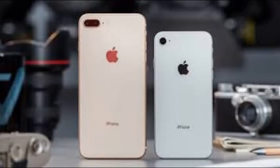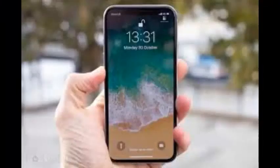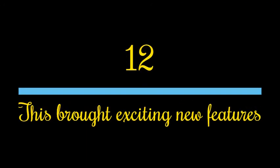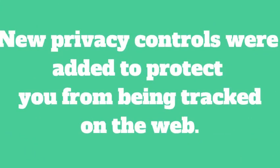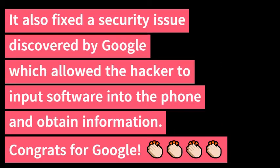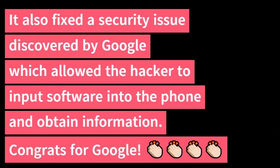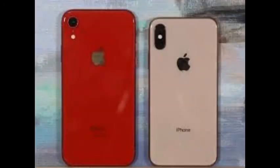The Apple iPhone 8 and 8 Plus were phones for iOS 11, as well as iPhone X. iOS 12 brings performance improvements and exciting new features to iPhone and iPad. Screen Time helps you and your family understand and make the most of the time spent on your devices. New privacy features help protect you from being tracked on the web. It also fixed security issues discovered by Google, which allowed attackers to install software on the victim's phone and obtain information. Version 12 was released on the 17th of September 2018. Phones for iOS 12 were the Apple iPhone XS and XR.